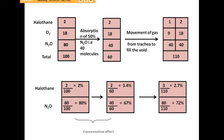Nitrous oxide alone cannot act as a good anesthetic agent because it has very low efficacy. Halothane alone cannot be given quickly as it has high blood solubility leading to slow induction. So both drugs are given together — nitrous oxide acts as a carrier for halothane or other inhalational agents, fastening their concentration and increasing tracheal flow. This is the second gas effect: nitrous oxide increases the concentration as well as the inflow of the second gas.